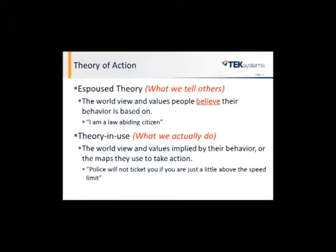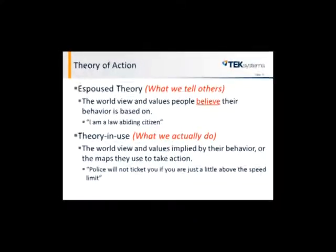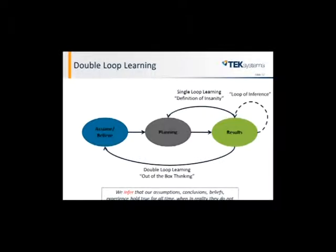You may have an espoused theory of 'I'm a law-abiding citizen,' but your real theory in use is 'police aren't going to ticket me if I just go a few miles over the speed limit.' That's really a contradiction. An example in service management is an organization says 'we believe in learning and development' — we believe you should do training with ITSM Academy or consulting — but then when you actually go to do it, they say 'there's no money for that.' That's an espoused theory versus a theory in use, and what knowledge management tells us is if you're going to say one thing, you should do that thing.